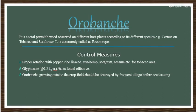First, Orobanche — it is a total parasitic weed observed on different host plants according to its different species. For example, on tobacco and sunflower; it is commonly called as broom rape. Control measures of Orobanche include proper rotation with pepper, rice, linseed, sorghum, sesame, etc., for the tobacco area.